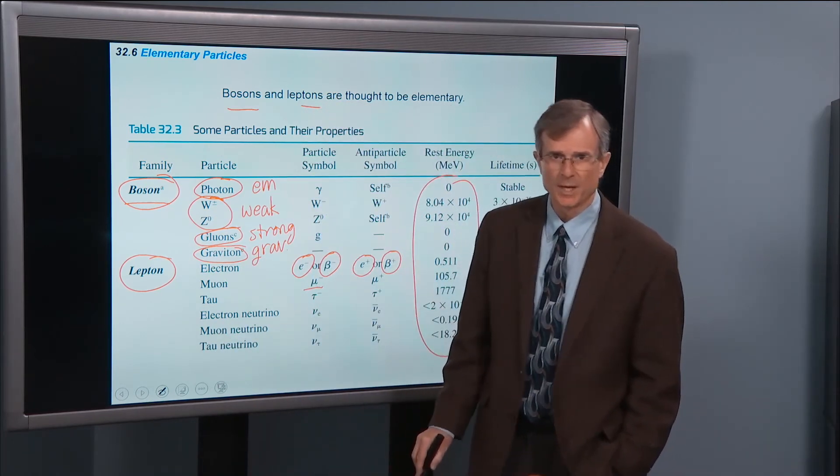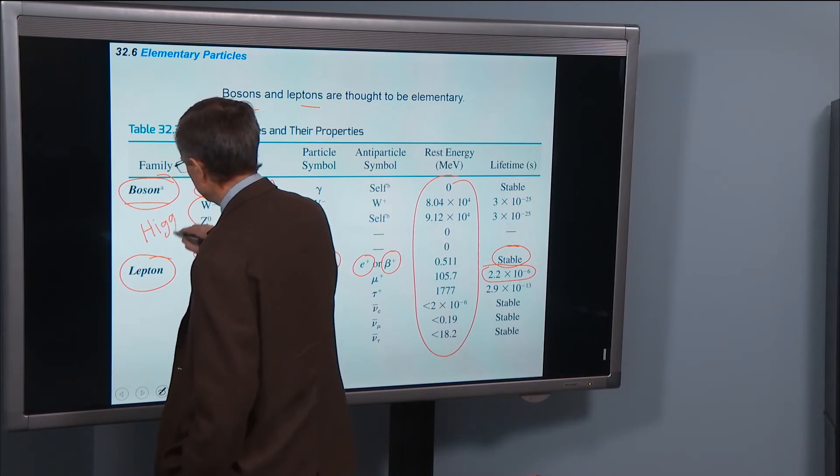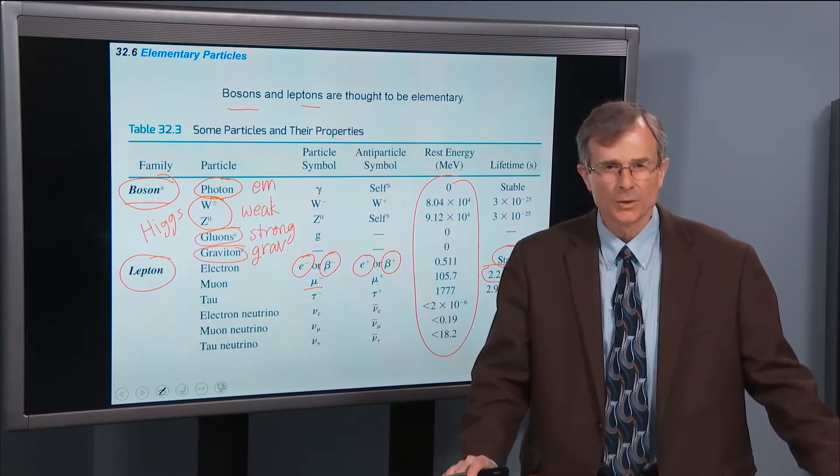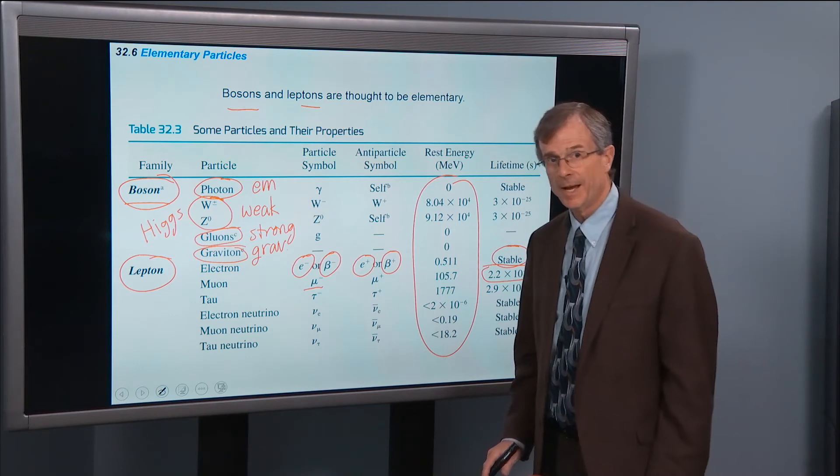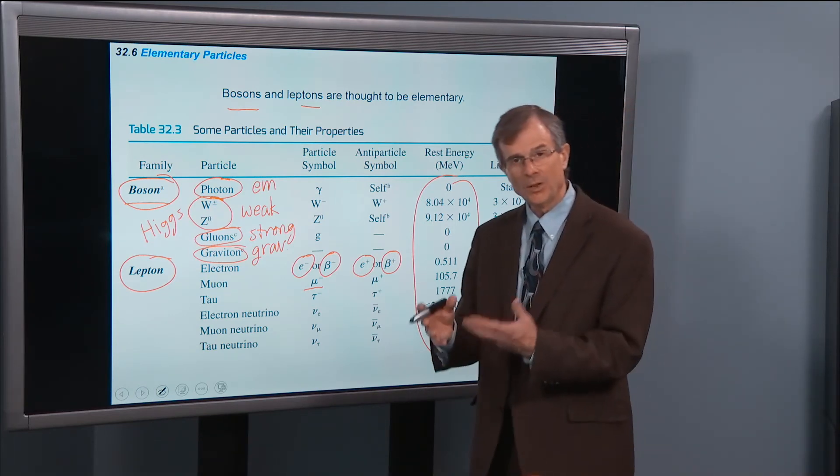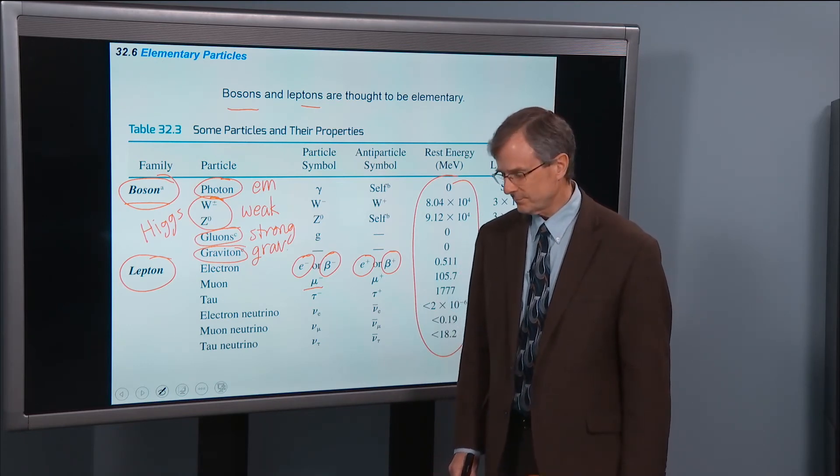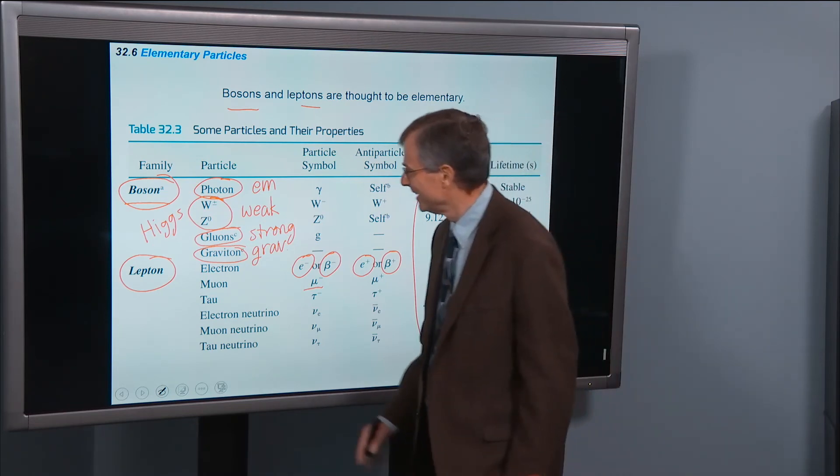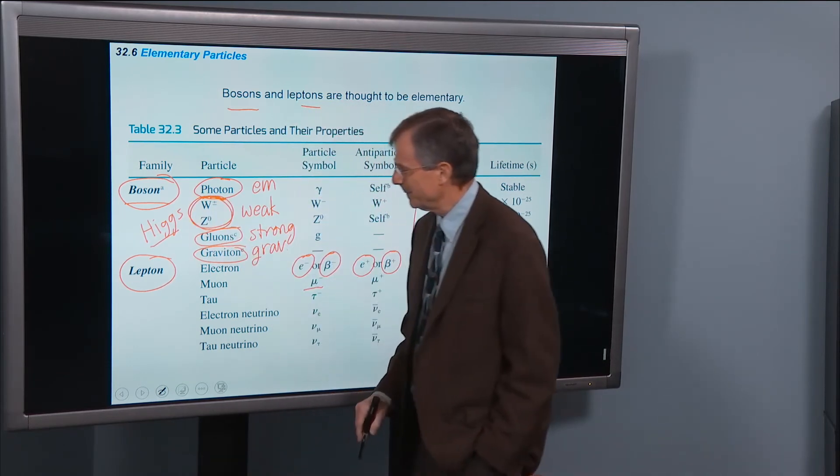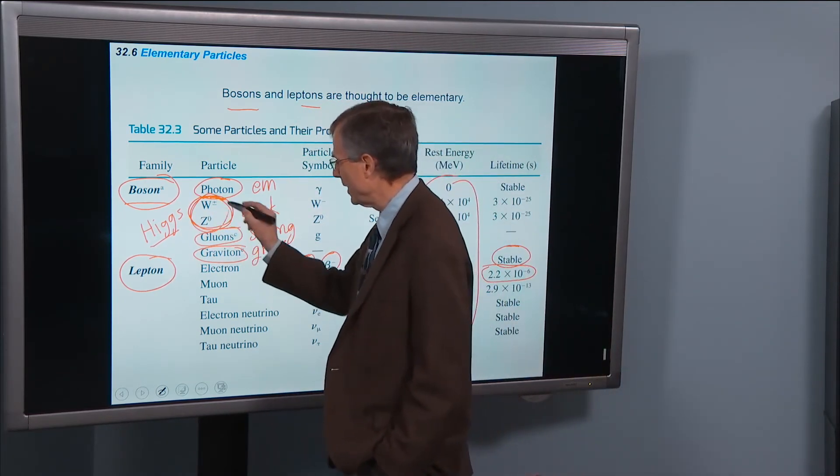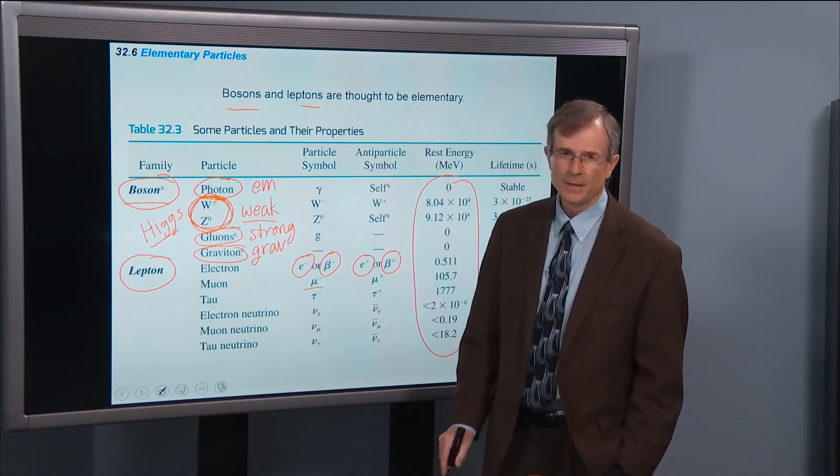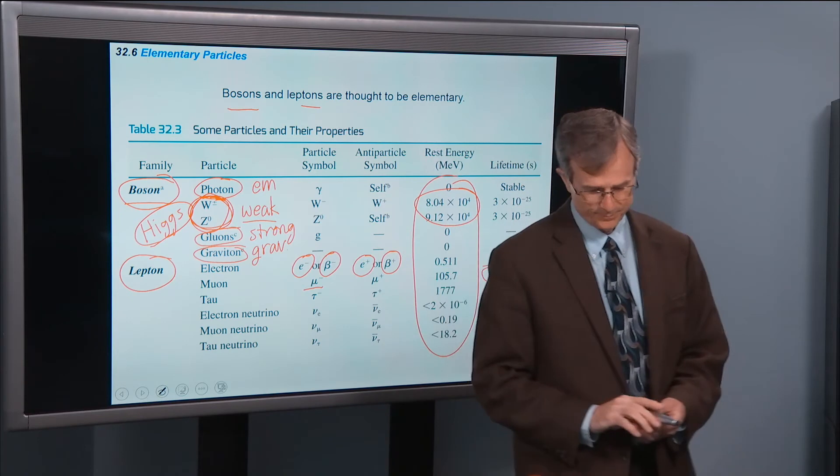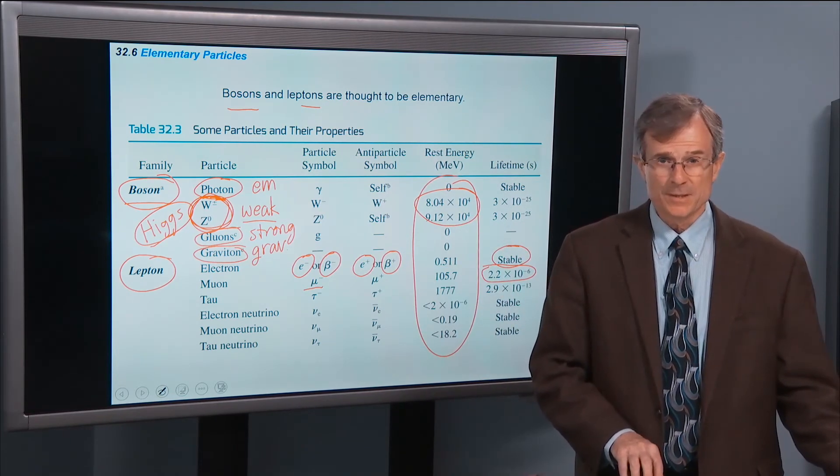The list of bosons is not complete. There's a so-called Higgs boson that a few years ago was finally observed experimentally. The Large Hadron Collider observed the Higgs particle, sometimes called the God particle. The Higgs is responsible for giving the W and Z bosons their mass. That's why these guys have mass.